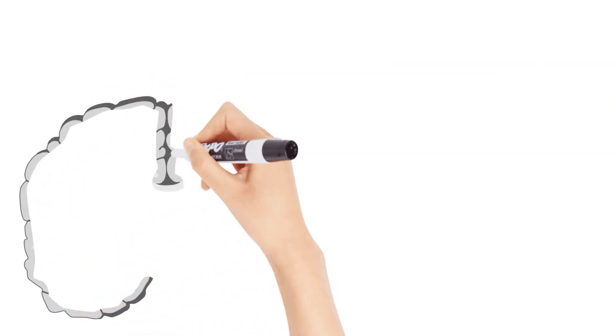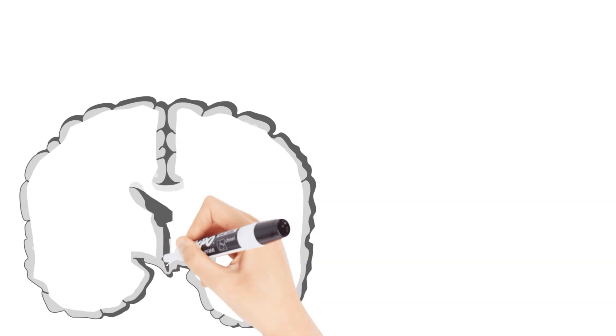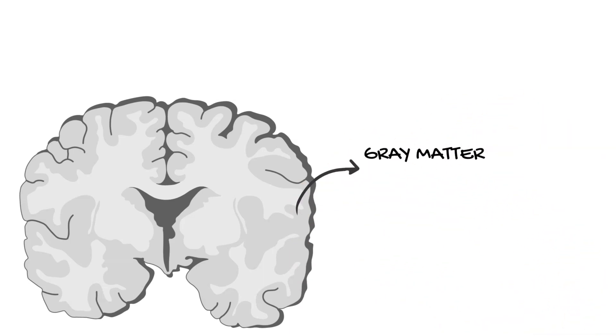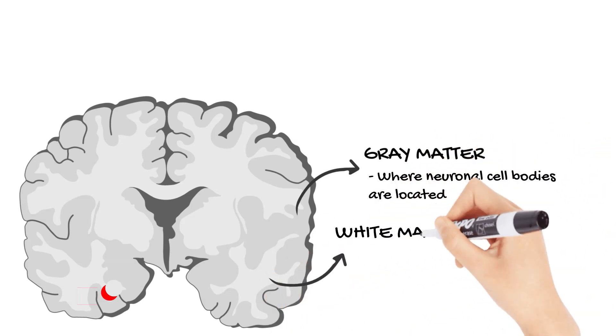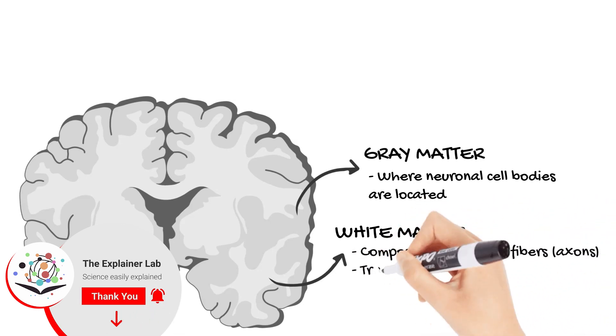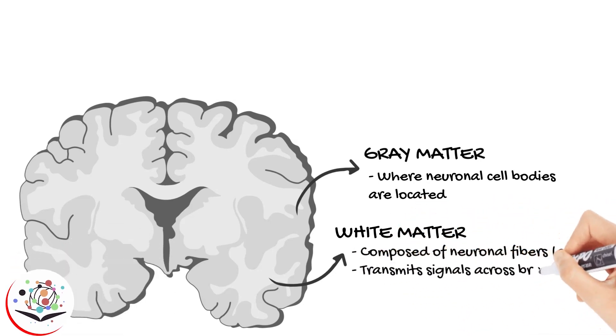The brain's composition is a masterpiece of design, with white and gray matter serving distinct yet interconnected roles. Gray matter is the seat of the brain's computational power, hosting neurons that process information and make decisions. White matter acts as the communication network, with myelinated fibers ensuring that messages are transmitted with lightning speed across the brain's vast regions.